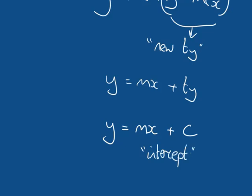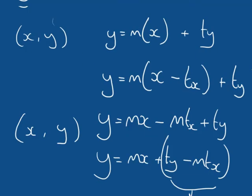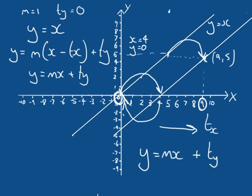The intercept is called such because C — the intercept — is the value at which we cut the Y axis. This might sound confusing, but I'm going to explain both visually and mathematically why this is the case.